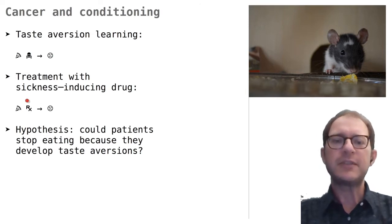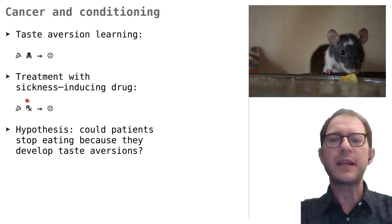We mentioned in the lesson on overshadowing that animals associate sickness very easily with flavors, but much less so with other stimuli. So Bernstein reasoned that the patient's brain could be unconsciously attributing the sickness to whatever it ate last, rather than to the treatment. The logical conclusion of this hypothesis is that patients would develop taste aversions to the foods in their own diet, which would turn them from yummy to yucky. And so they would eat less and less as the treatment goes on.